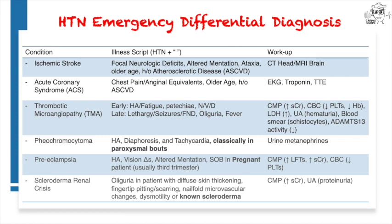Again, you should call your stroke response team to expedite your CT head or MRI brain. For troponin elevations, the symptom course, EKG, and echo findings will help you differentiate between acute coronary syndrome, or ACS, and a type 2 MI. Anginal chest pain, dynamic EKG changes, and wall motion abnormalities on echocardiogram should steer you towards ACS.